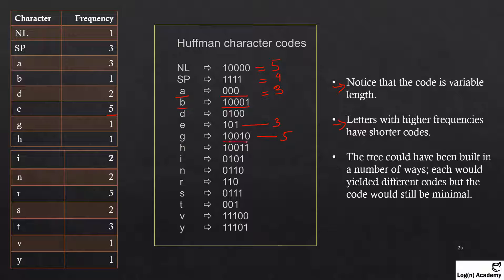In contrast, 'g' has a code of 5 bits because its frequency is very low — only 1. So letters with higher frequency get shorter codes. The third point is that the tree could have been built in a number of ways; each would yield different codes, but the codes would still be minimal. When we connect nodes differently we get different codes, but the result remains minimal, as we saw when our connections gave different numbers but the same final total.